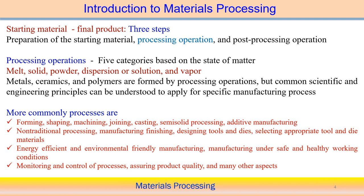Looking at the different manufacturing processes, we can categorize common ones: non-traditional processing, finishing operations, design of tools and dies appropriate for metal forming processes. Sometimes we look at energy-efficient and environmentally friendly manufacturing processes where the environmental concern is more important. Based on that, we can select different types of manufacturing processes. Manufacturing processes under safe and healthy working conditions are also important factors to consider.